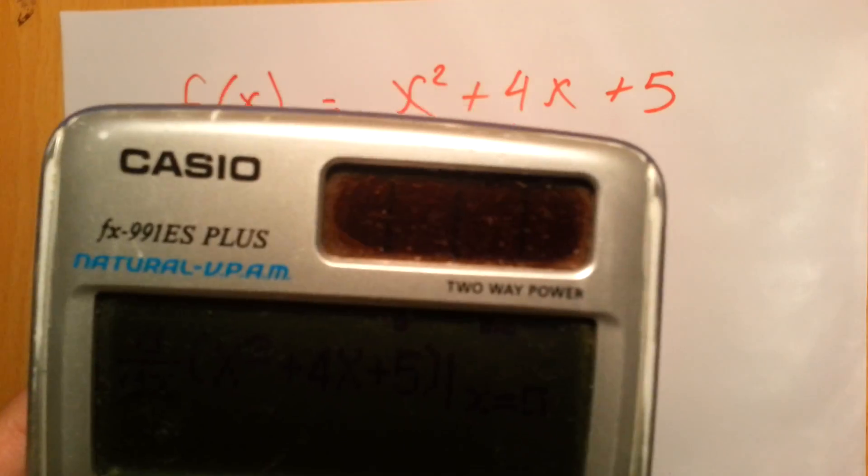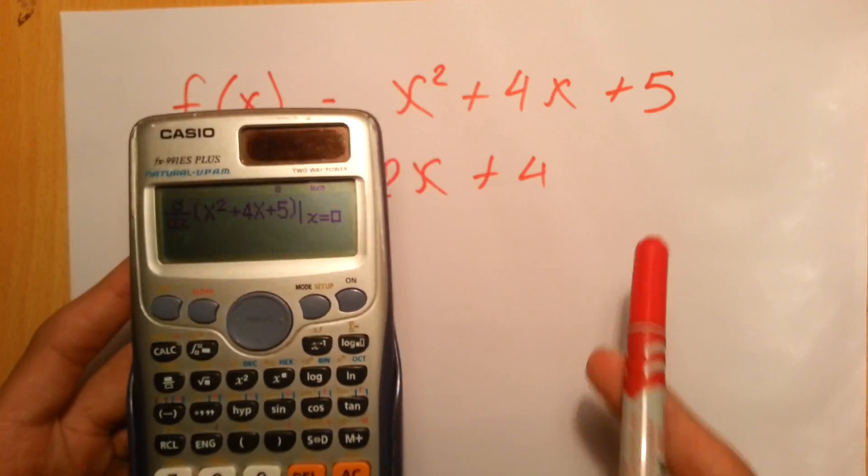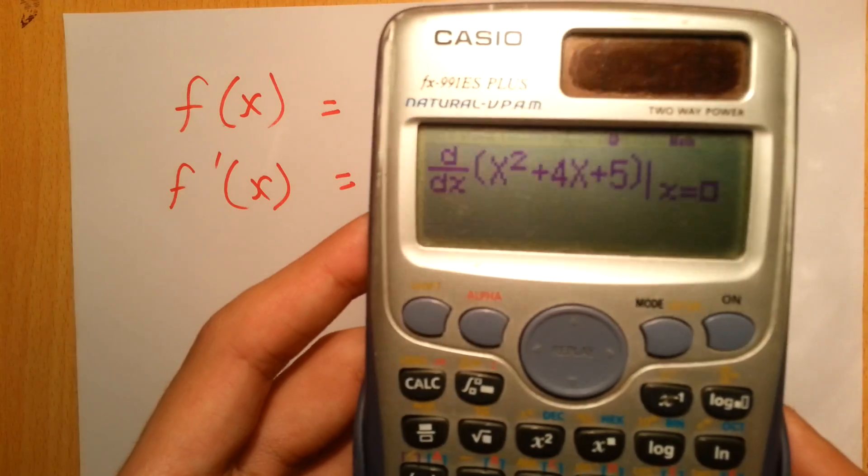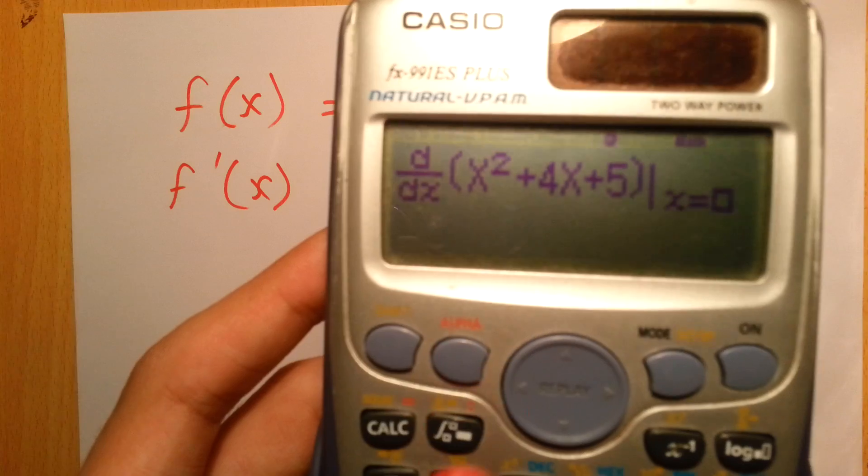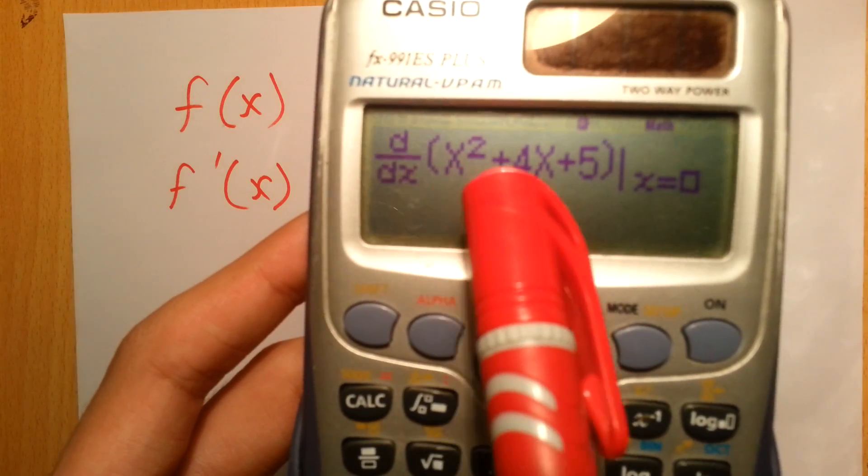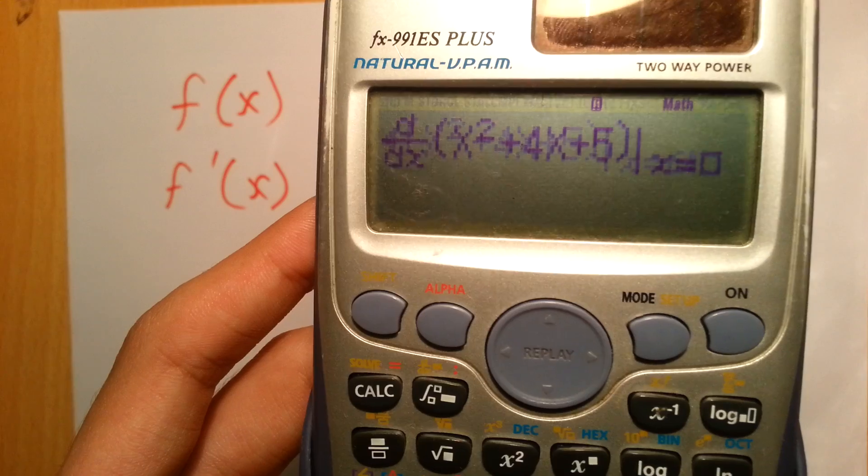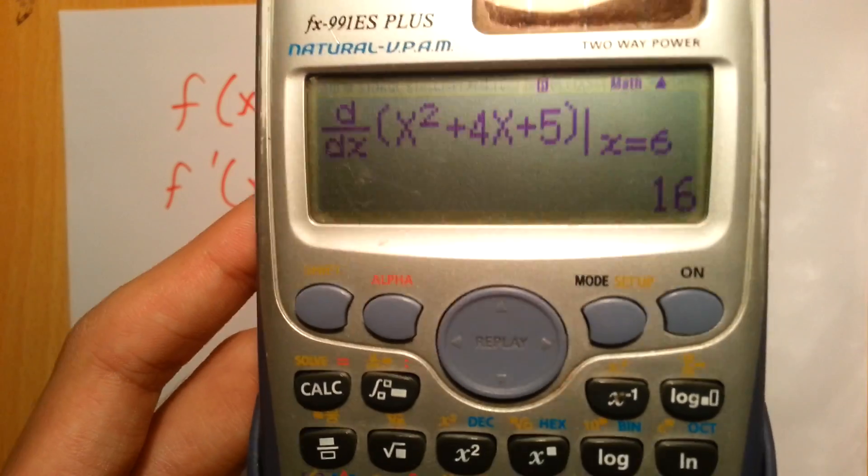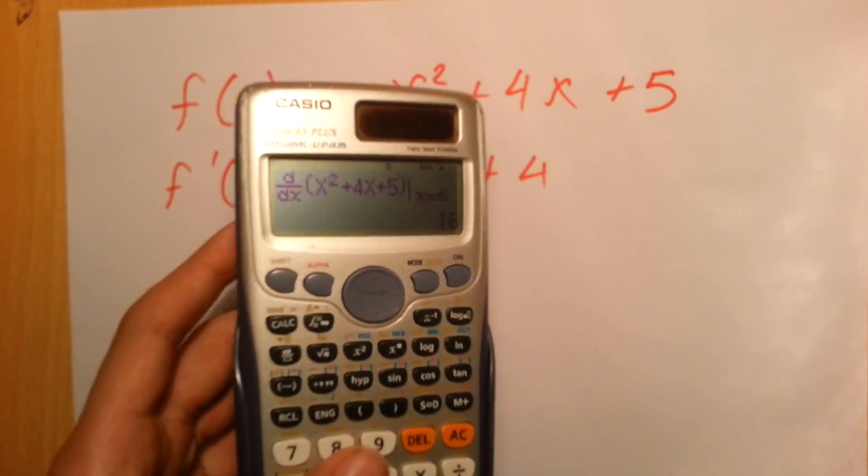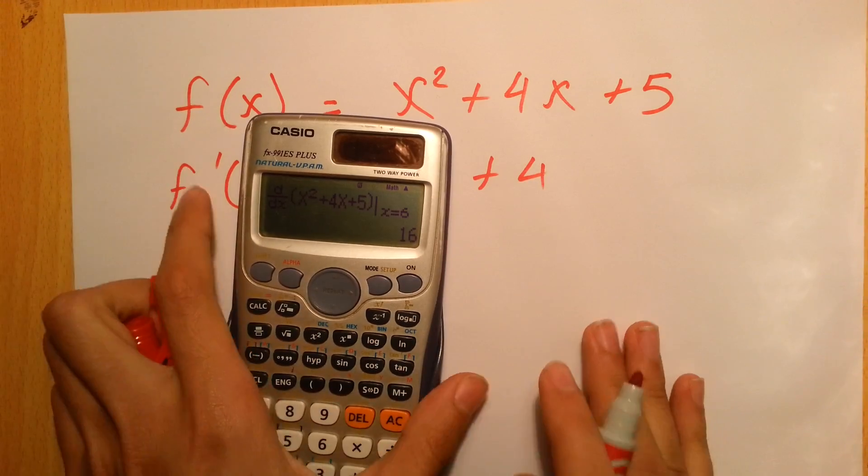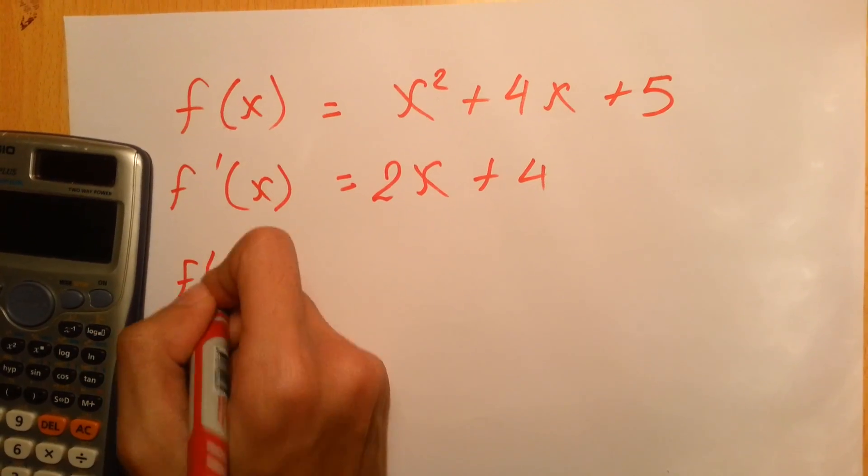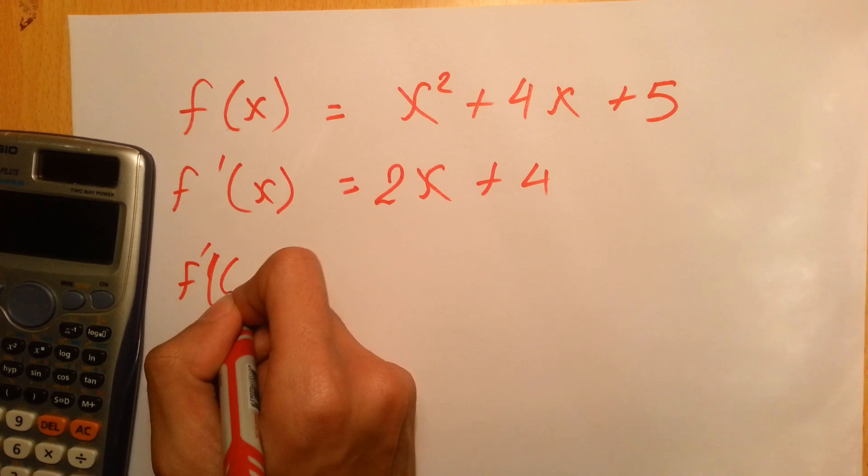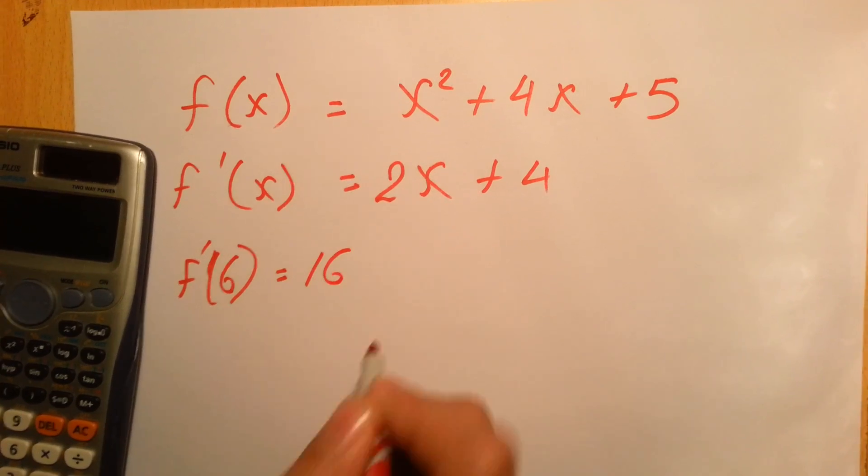Then let's say you can just use any number. Let's say we'll use the number 6. So we say that we want the derivative of the function x squared plus 4x plus 5 when x equals 6, and we check this. The answer is 16.